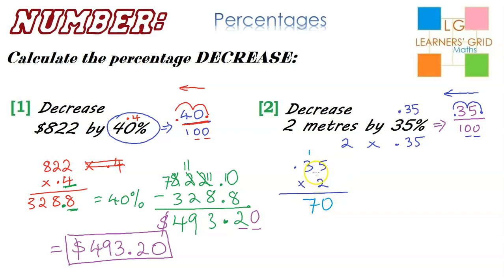2 times 3 is 6, plus that one we just carried is 7. Where does the decimal point go? Well, there's two decimal places in the question, which means we must have two decimal places in the answer. So the decimal point has to go here. So 0.7 equals 35%.